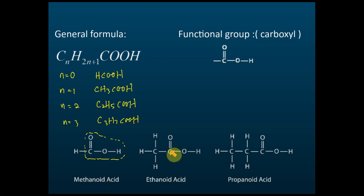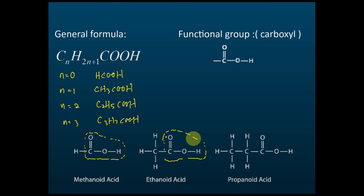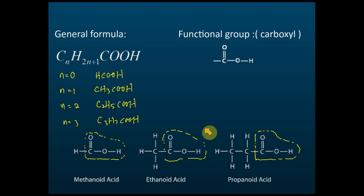The second carboxylic acid has two carbons, so we call it ethanoic acid. The third has three carbons, so we call it propanoic acid. This is the introduction to carboxylic acids — the general formula, the functional group, and the names of the first three members.